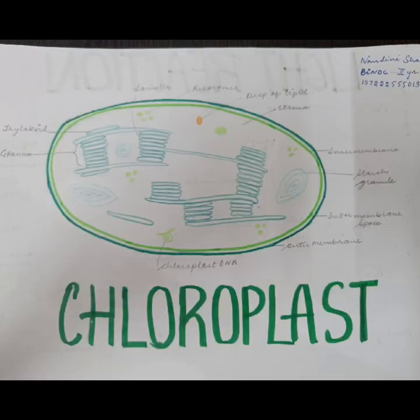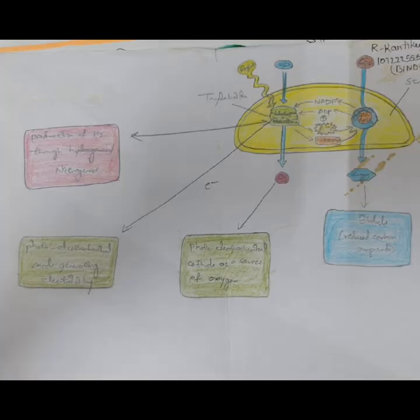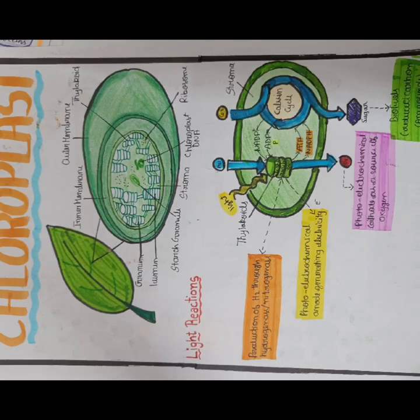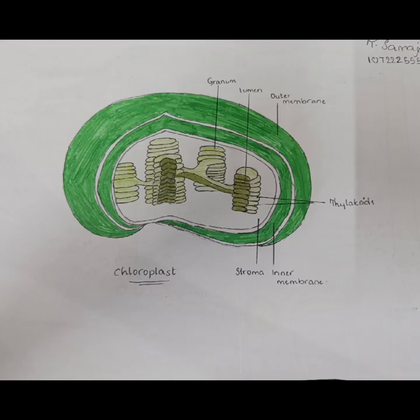In plants, chloroplasts occur in all green tissues, though they are concentrated particularly in the parenchyma cells of the leaf mesophyll.